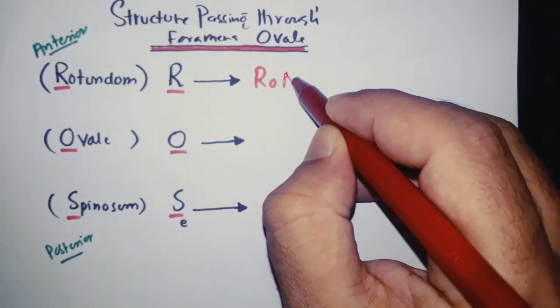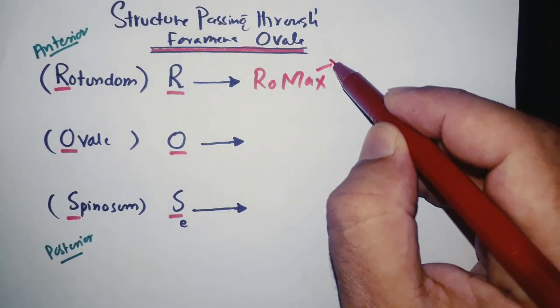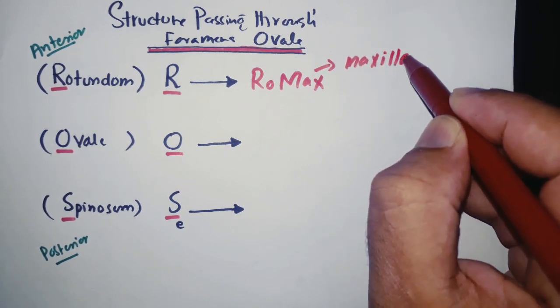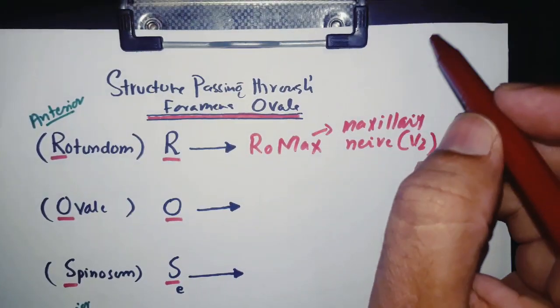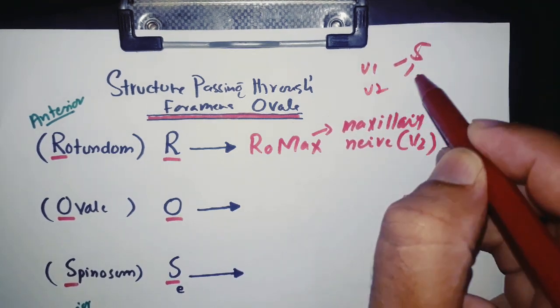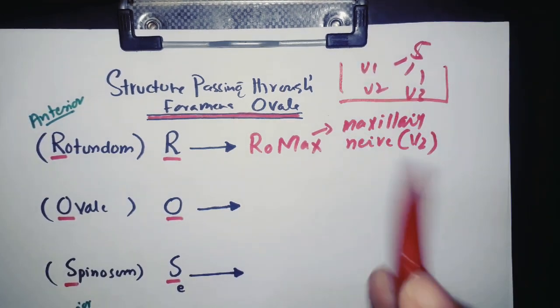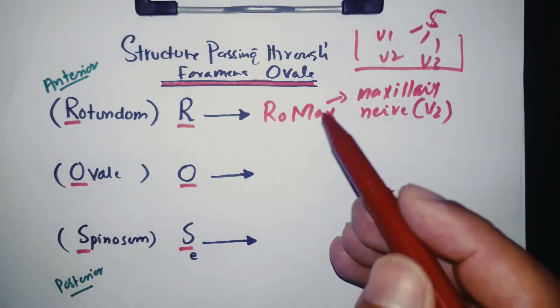So now the mnemonic for rotundum, just remember RO MAX. MAX is for maxillary nerve, which is the second branch of trigeminal nerve. So the trigeminal nerve is consisting of V1 ophthalmic nerve, V2 maxillary, V3 mandibular. Now RO is for rotundum.